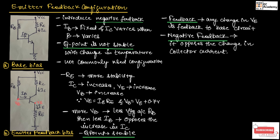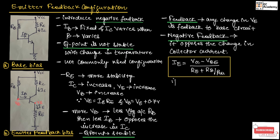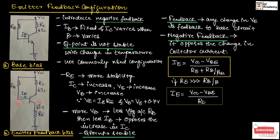For emitter feedback configuration, we can write the expression for emitter current IE as: IE = (VCC minus VBE) divided by (RE plus RB divided by beta DC). If RE is very much greater than RB divided by beta, then we can write IE is equal to (VCC minus VBE) divided by RE. VCC can also be written as VCC minus IC times RC.